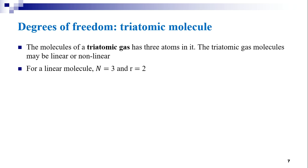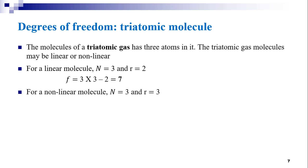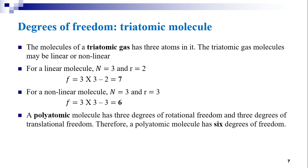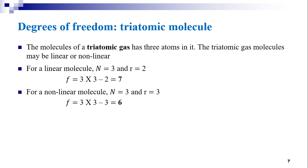For a linear triatomic molecule, N = 3 and R = 2. Hence, F = 3 × 3 − 2 = 7. Therefore, 7 degrees of freedom exist for a linear triatomic molecule. For a nonlinear triatomic molecule, N = 3 and R = 3. Then, F = 3 × 3 − 3 = 6. Hence, for a nonlinear triatomic molecule, the total number of degrees of freedom is 6.